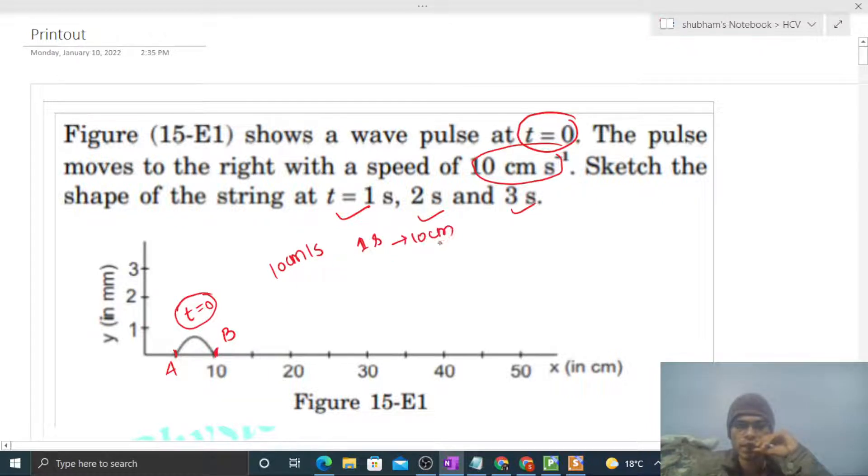So at t equals 1 second, what will happen is this whole wave pulse will shift 10 cm towards the right. Now see, end A is at 5 cm, so after a 10 cm shift it will be at 15 cm. And end B is at 10 cm, so after a 10 cm shift it will be at 20 cm. So this is end A and this is end B at 1 second.